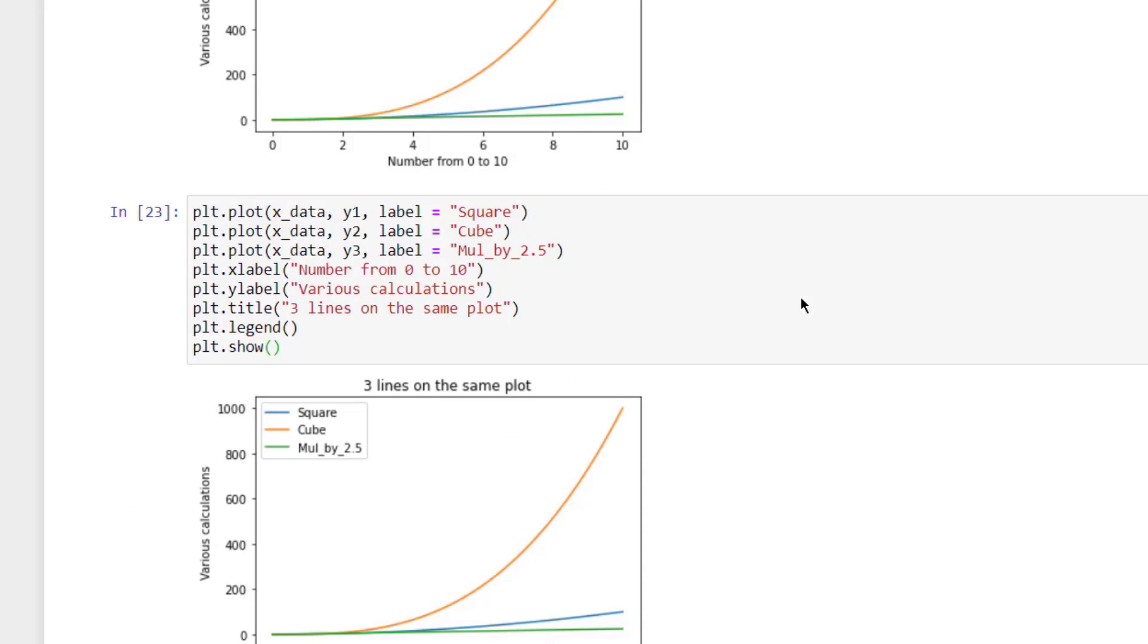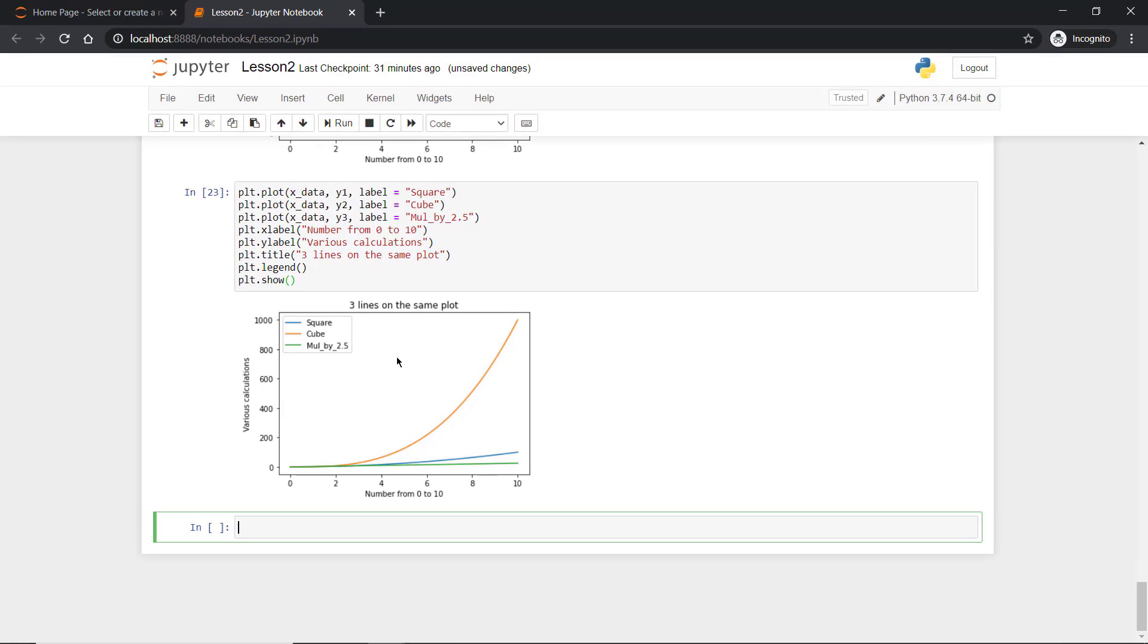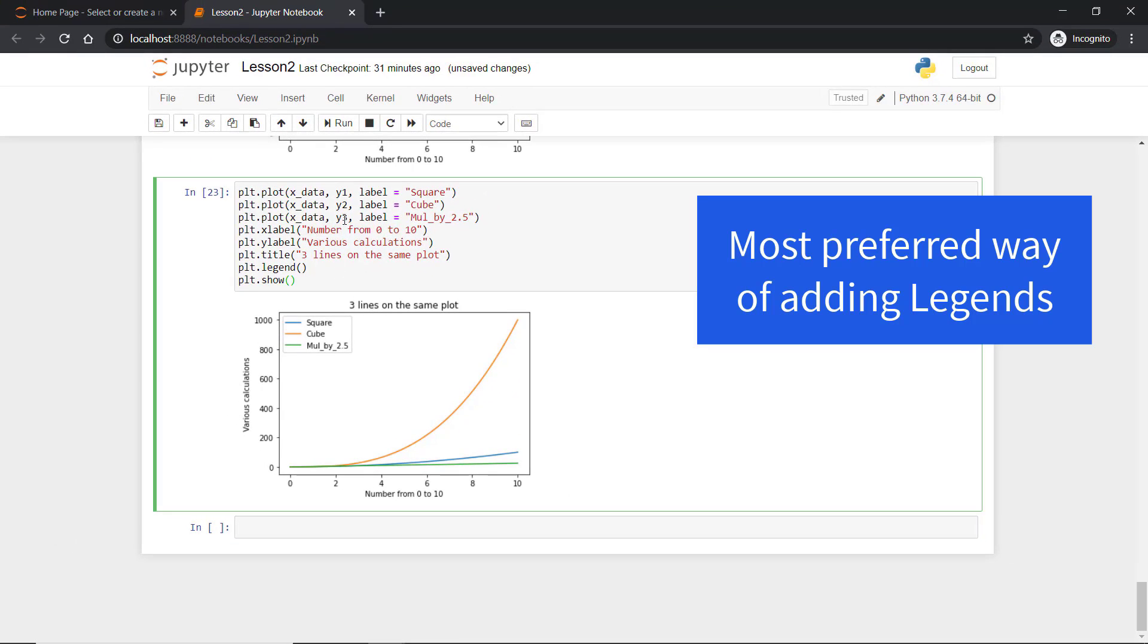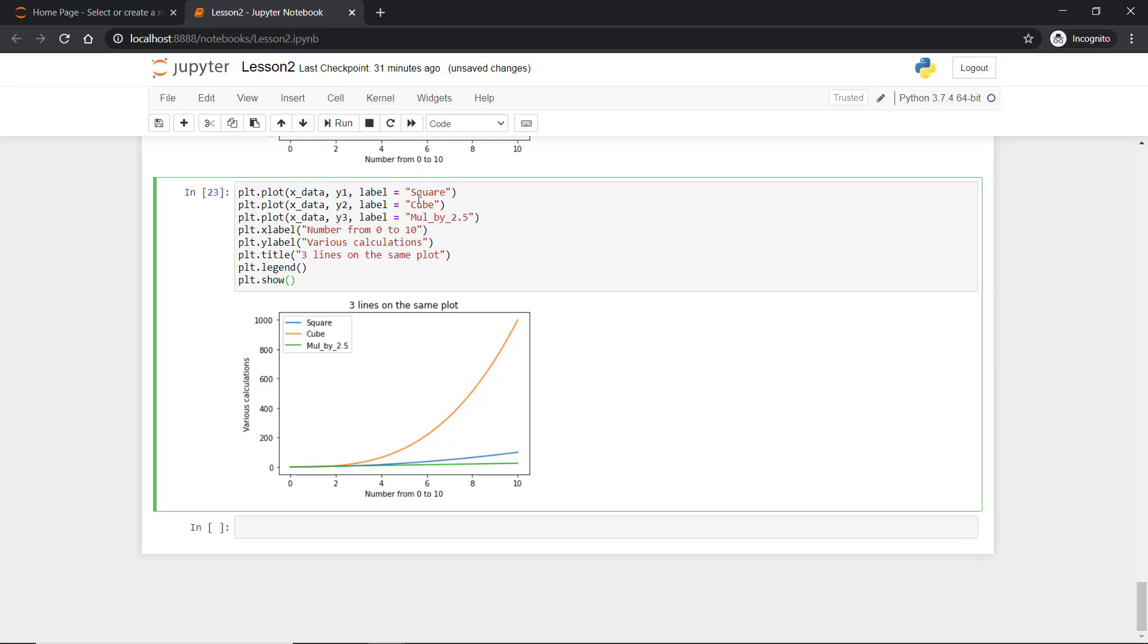So blue is for square and orange is for cube and green is for multiply. The legend has been assigned for all these plots correctly. And this is the most preferred method because there is no confusion in case if you have more than 10 lines or 10 plots. I would also recommend you to use this method.